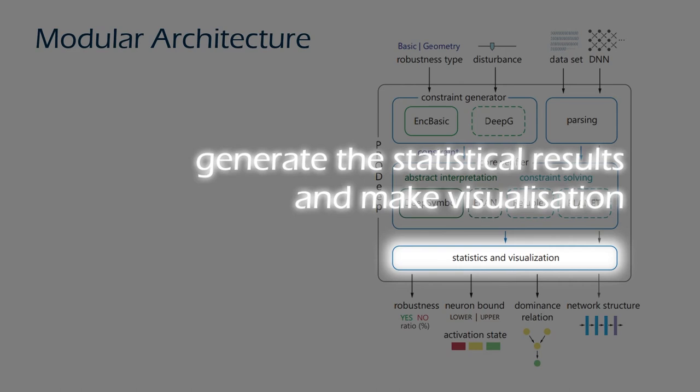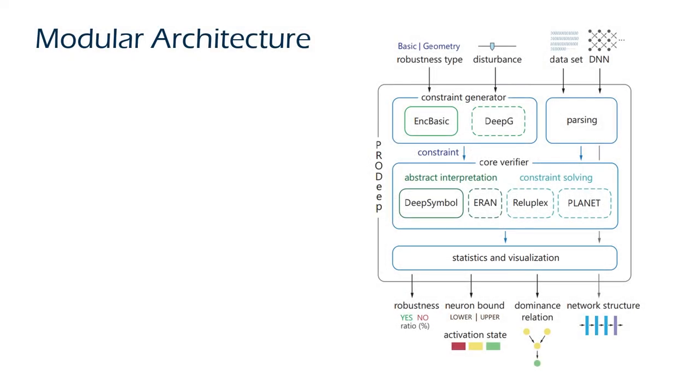When the verification is finished, the statistics and visualization module organizes the data obtained from the core verifier and prepares the statistics and visualization. The output module presents the summary information in a user-friendly way.